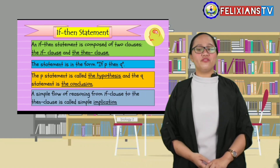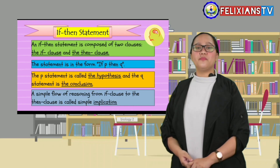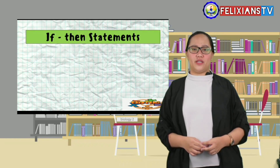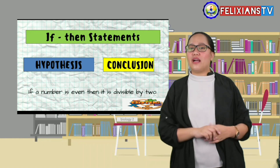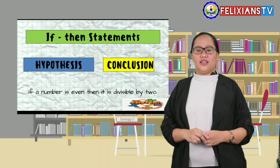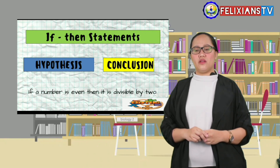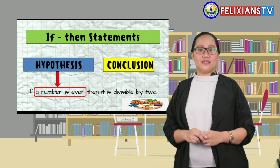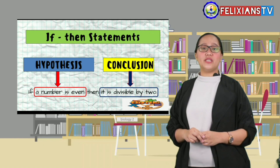A simple flow of reasoning from the if clause to the then clause is called simple implication. The if-then statement is composed of two parts: the hypothesis and the conclusion. For example, if a number is even, then it is divisible by two. The hypothesis is 'a number is even,' and the conclusion is 'it is divisible by two.'